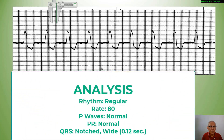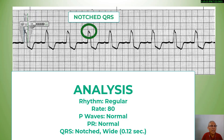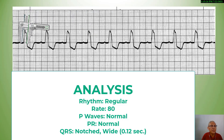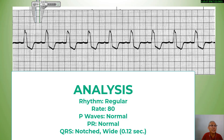Let's analyze this ECG. The rhythm is regular, the rate is 180, the P waves are present and normal, and the PR intervals appear consistent. The QRS complex looks notched, and measuring it, we see that the QRS complex is three boxes — that's 0.12 seconds — which is abnormal. Note also the notching of the QRS complex.